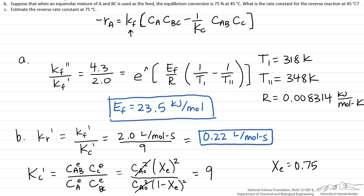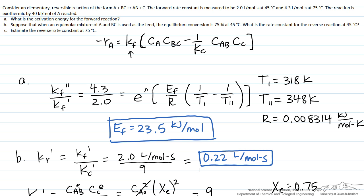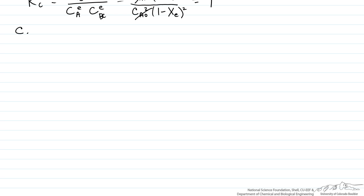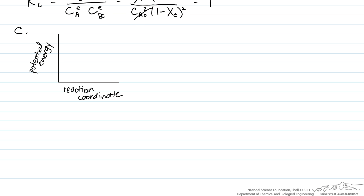In part C, we need to estimate the reverse rate constant at 75°C. To do this we need the activation energy for the reverse rate constant. The key piece of information is that the reaction is exothermic by 40 kJ per mole of A reacted. On a potential energy diagram for an exothermic reaction, the products sit at a lower energy than the reactants, so the activation energy for the reverse reaction equals the forward activation energy plus the heat released by the exothermic reaction.